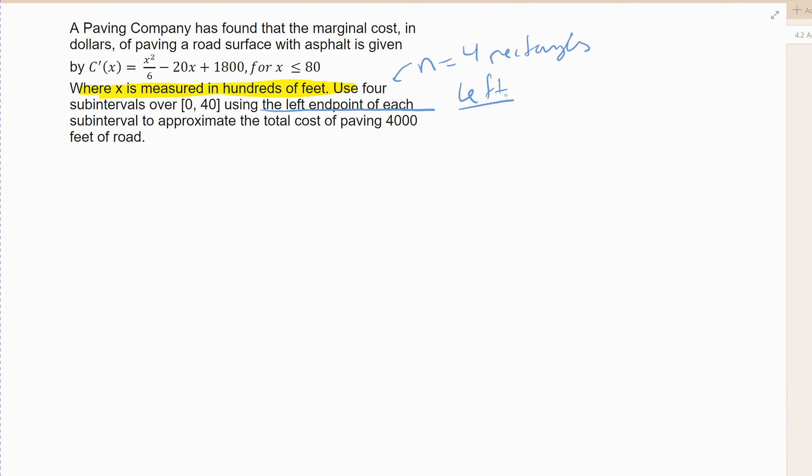So I'm going to break it down into 4 endpoints using the subinterval to approximate the cost of paving 400 feet of road. Remember, that is x of 40. 40 represents 40 hundred, which comes out to 4,000 feet of road. Alright, so that is why we are looking from 0 to 40, right? Because that's where the x value stops.